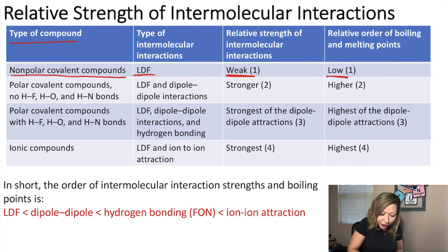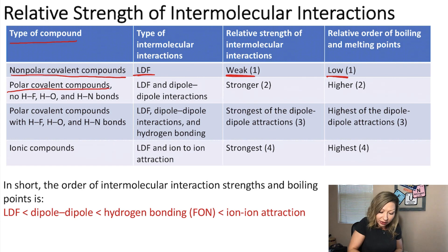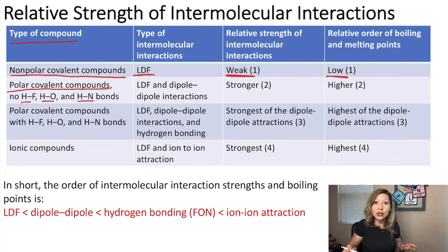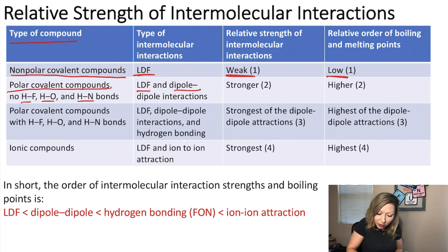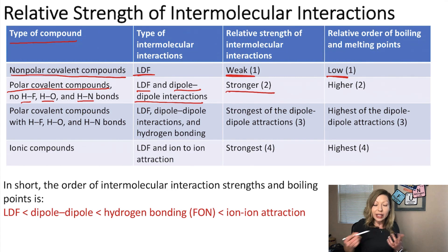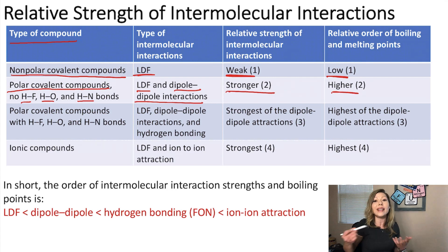If we move on to polar covalent compounds without HF, HO, and HN bonds — so without hydrogen bonding — we also add dipole-dipole interactions on top of London dispersion forces, which give stronger intermolecular interactions and higher boiling and melting points.